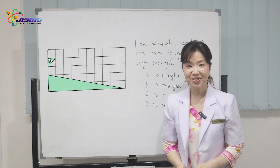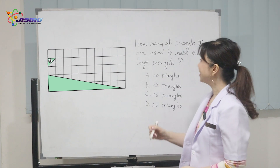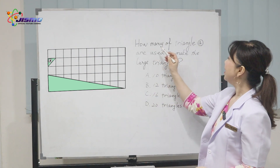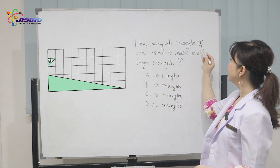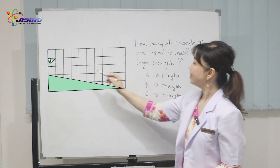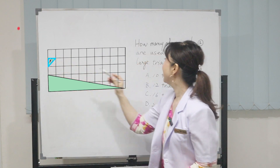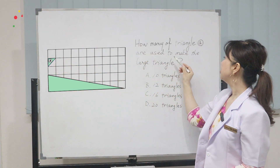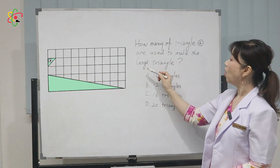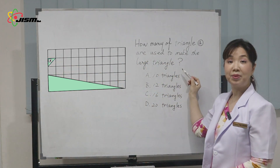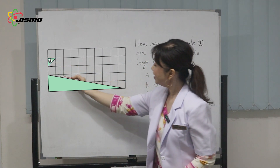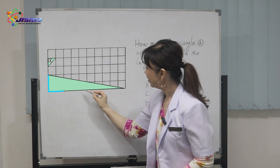Today's question is: How many of triangle A are used to make the large triangle? Here is a large triangle.